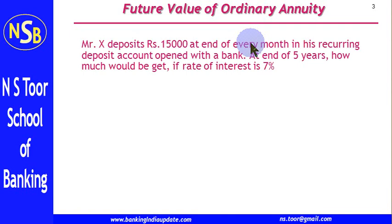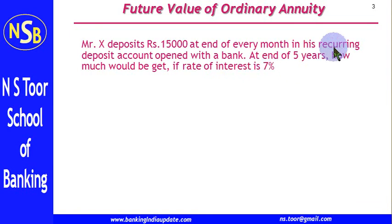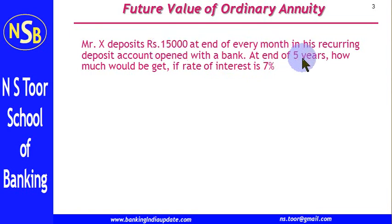Here is the question. Mr. X deposits Rs 15,000 at the end of every month in his recurring deposit account opened with a bank. At the end of 5 years, how much would he get if the rate of interest is 7%?